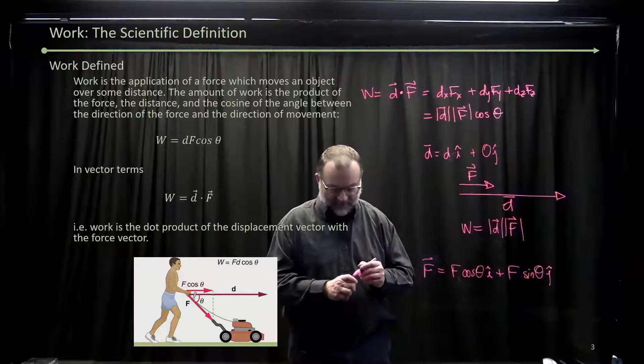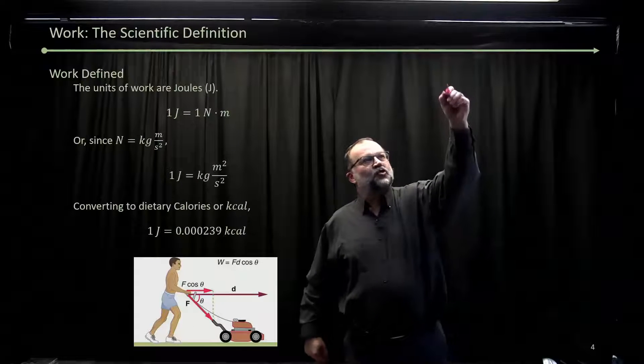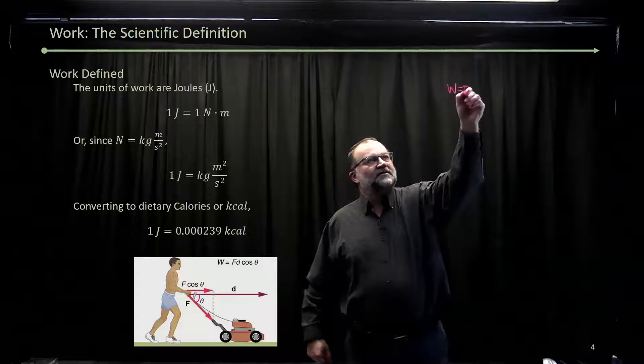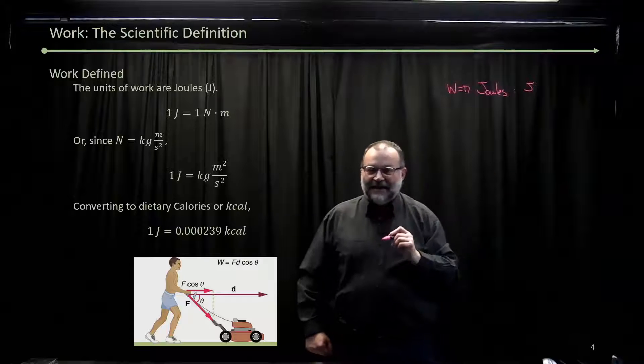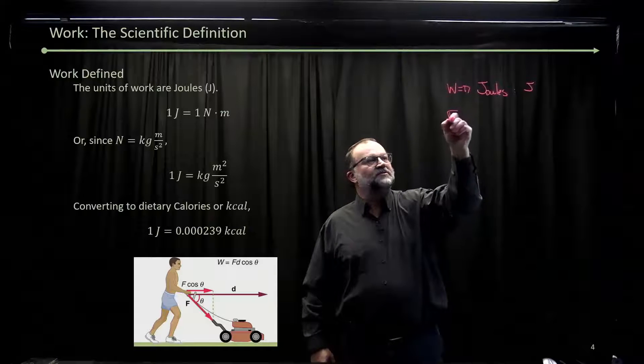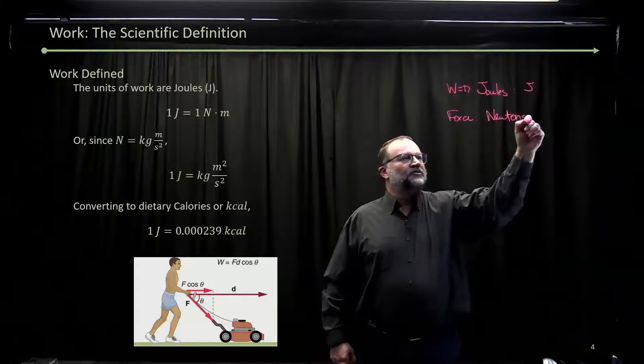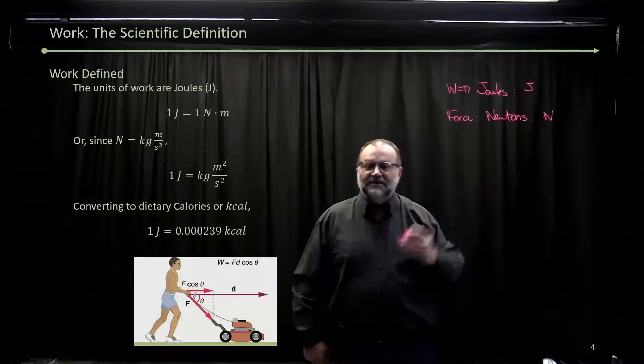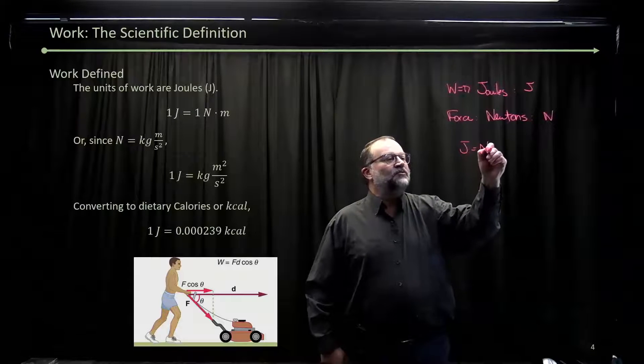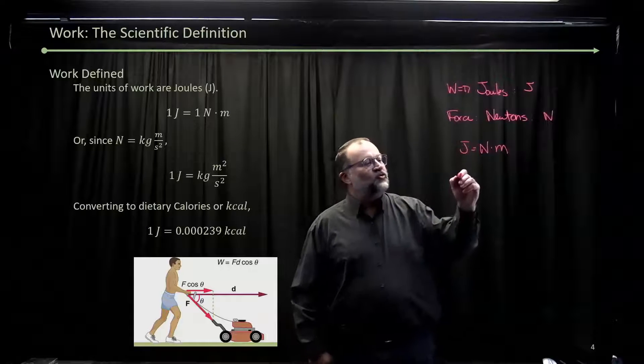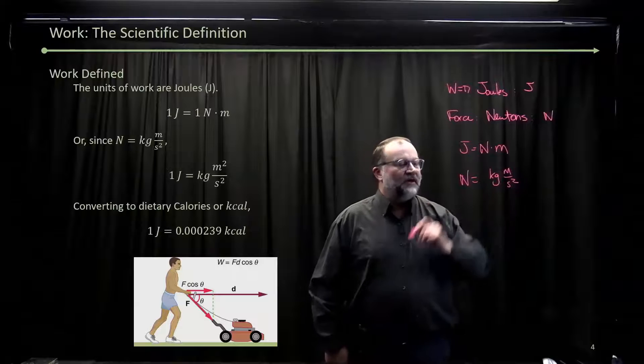The units of work are joules, which we use a J for. And that comes from force, which is in newtons—which we use an N for—times distance. So a joule is a newton times a meter. What's a newton? A newton is a kilogram meter per second squared. That's a newton.